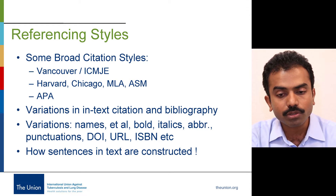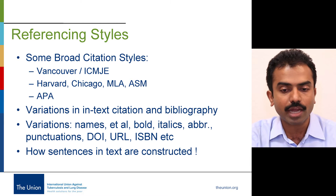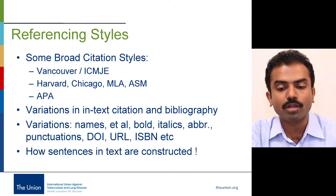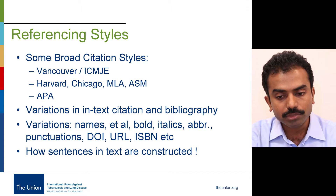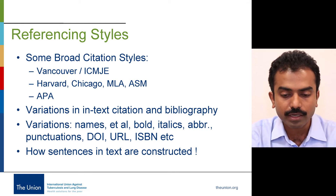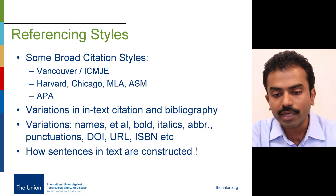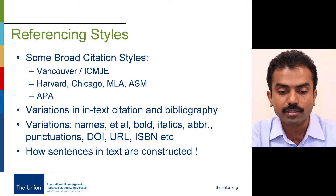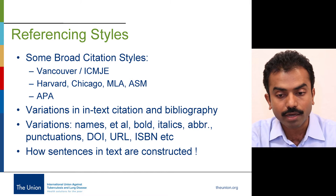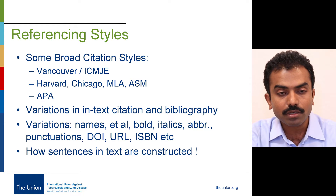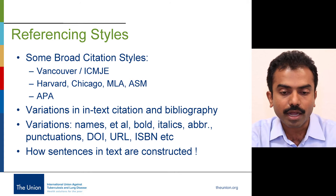Even though journals subscribe to one of these two styles, they have their own variations — in the way author names are cited, the number of authors that have to be cited, whether something is bold or italics, whether it should be abbreviated, and some of the punctuations. Virtually every journal comes with its own style. If you look at some of the softwares, they have a style for each journal, and it goes to more than 5,000 or 6,000 citation styles. So this is going to be an issue, and we'll discuss how to deal with this.